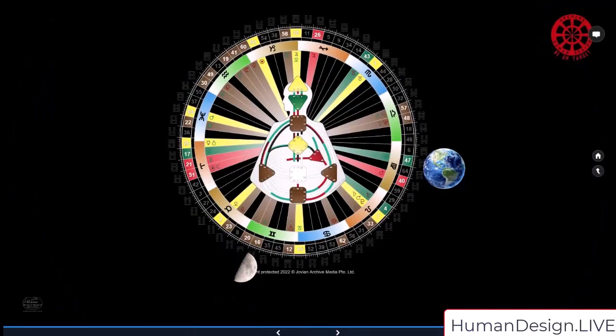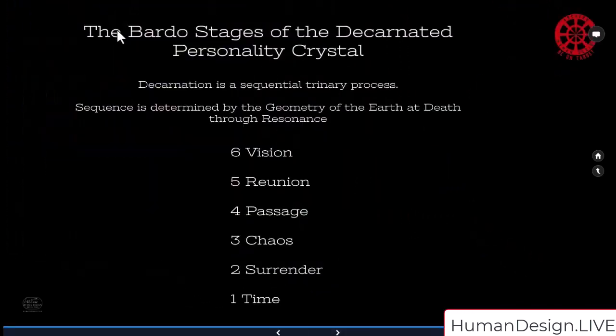Though the moon is the dying trigger and will actually go to the point where somewhere in that cycle it's going to click in and death is taking place, in fact it's actually the Earth, transit Earth, that is establishing that sequence. So in death, dying, and Bardo, we dive into more of this. Here's the Bardo stages of the decarnated personality crystal. Now decarnation is a sequential trinary process. The sequence is determined through the geometry of the Earth at death through resonance.